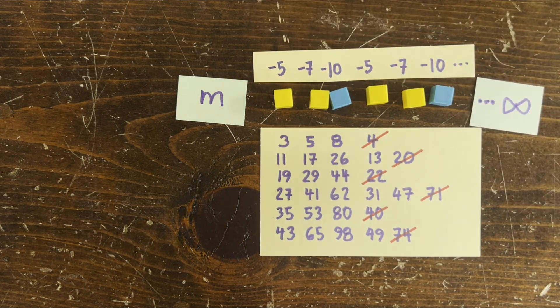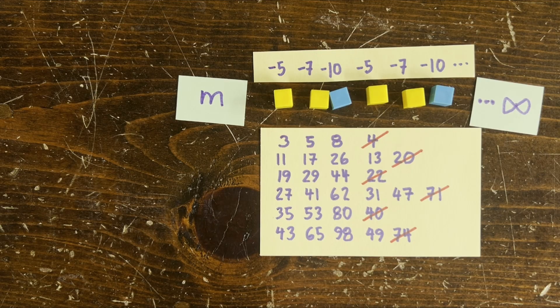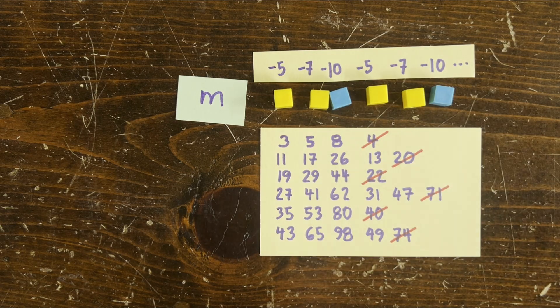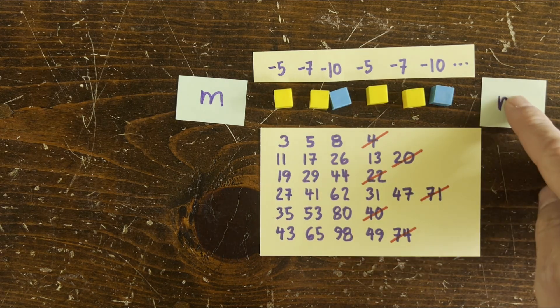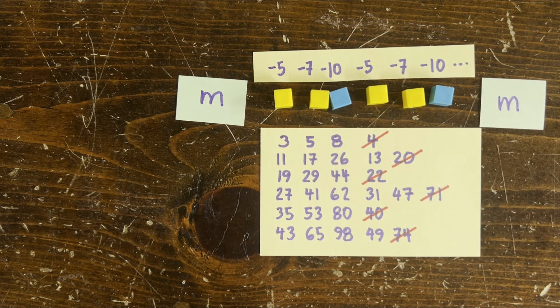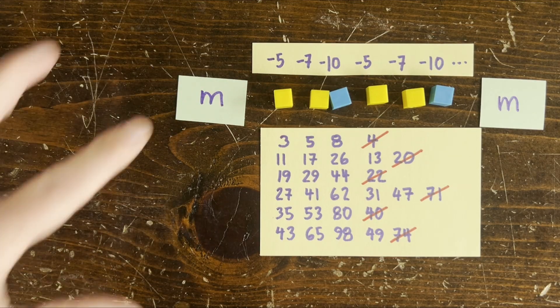Unless we go negative. So here we get negative 5, negative 7, negative 10, negative 5, negative 7, negative 10, etc. Which does obey the odd, odd, even trajectory indefinitely. But it's a loop instead of a divergent trajectory.